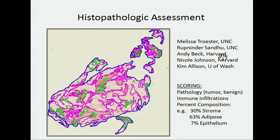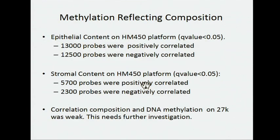Andy Beck at Harvard trained an algorithm that can do this in an automated fashion, and he can now do this very rapidly on all of our TCGA samples, also collecting other morphometric data from these tissues at the same time. Using this data, we were able to go back and look at whether there were particular methylation marks correlated with the stromal or epithelial content of the tissue. On the 450 platform, there were a huge number of probes positively correlated — about 1,300 probes — and 1,250 probes negatively correlated with epithelial content at an FDR of about 5 percent. There was also a large number of genes correlated with stromal content. Being able to look at these gene sets might help us interpret methylation profiles and give clues to the sort of changes we're seeing.